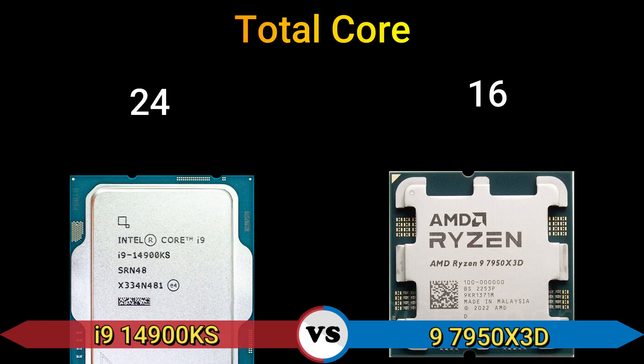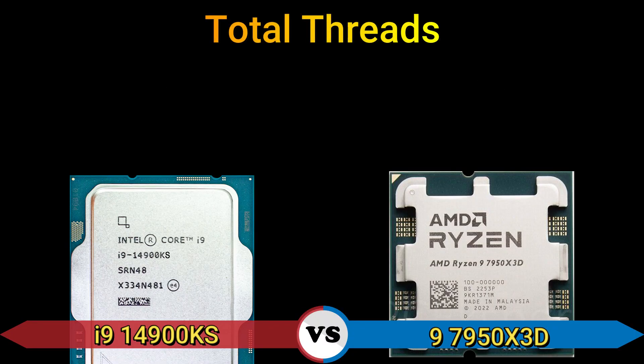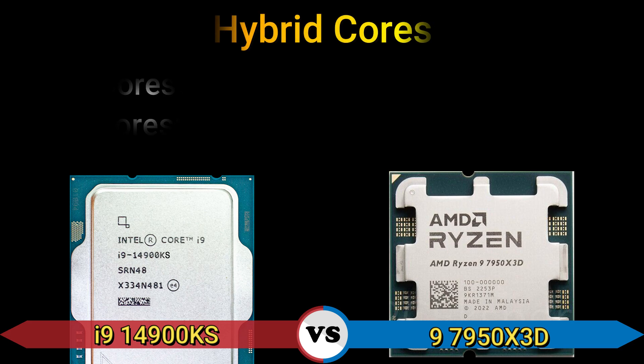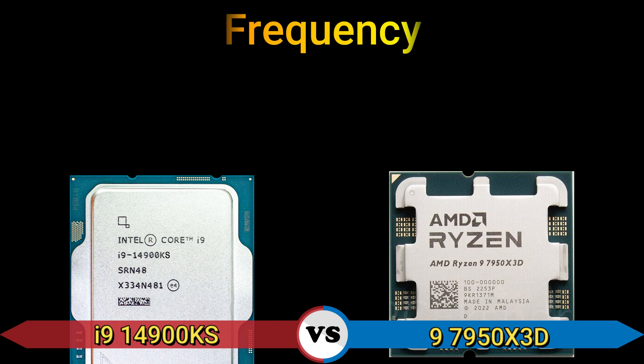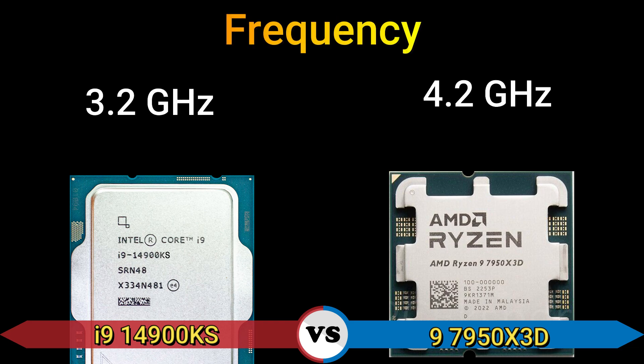Total cores: 24 and 16. Total threads: 32. Hybrid cores: performance cores 8, efficiency cores 16, and performance cores 16 with no efficiency cores. Frequency: 3.2 GHz and 4.2 GHz.